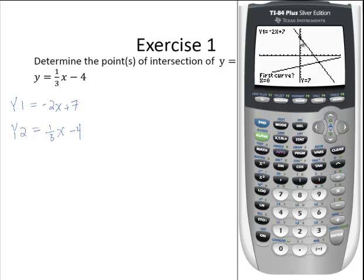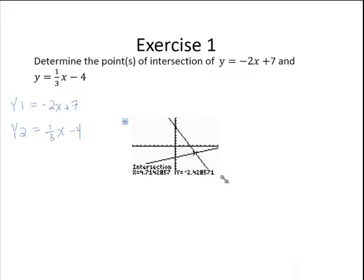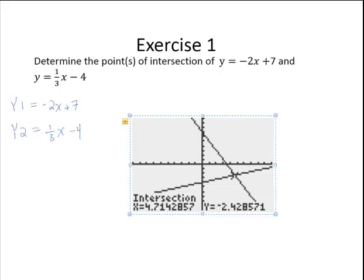Here is my cursor at 0, 7. I am going to get into the habit of moving it close to the point of intersection, which is to the right of where my point is now. So I am going to continue pressing the right cursor until I am reasonably close, and then I will hit enter 3 times. And I see the intersection at 4.7142857 and negative 2.428571.